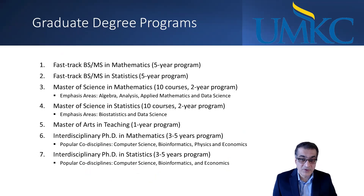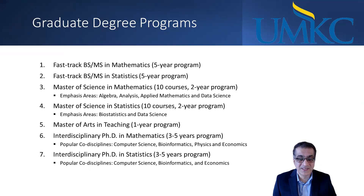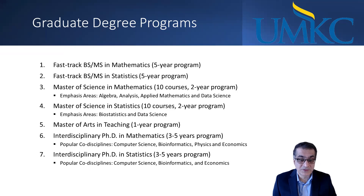Graduate degree programs. There are two master's degrees — one in mathematics and one in statistics. The non-thesis option is 10 courses that students have to pass, and it usually takes two years or less. There are emphasis areas that students can choose from, and there is also a thesis option for students who want to do more research.